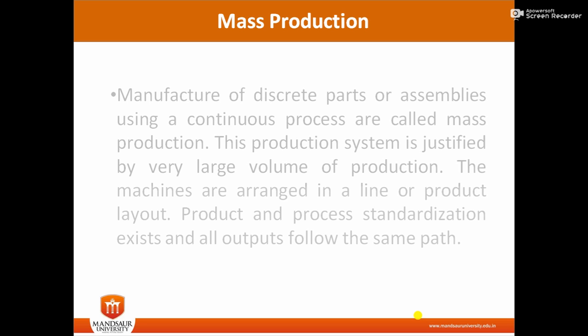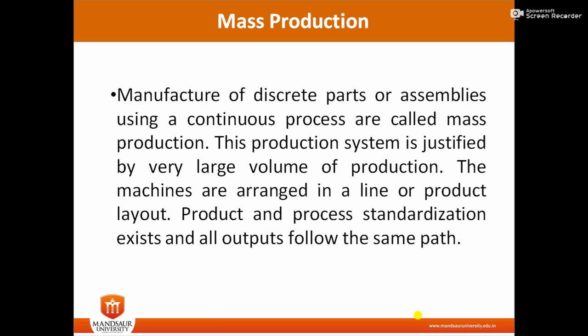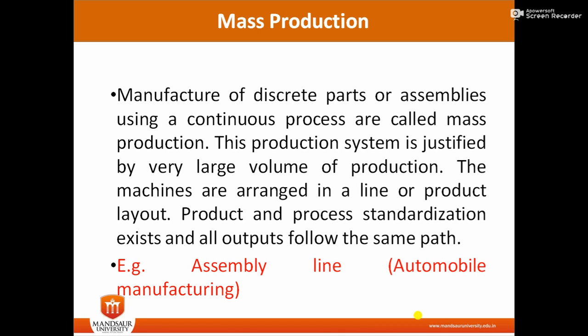Mass production involves discrete parts or assemblies using a continuous process. We have an assembly line where goods are produced in a continuous process. This system is justified by very large volumes of production, and machines are arranged in a line or product layout in sequence. One product or process is standardized, and the output of one process becomes the input of the next. The example is an automobile manufacturing industry, where automobiles are manufactured in an assembly line production system producing mass output.